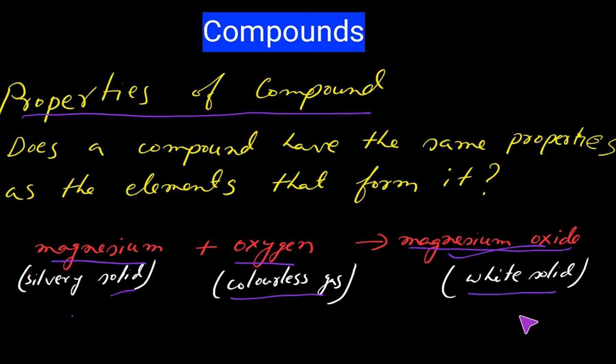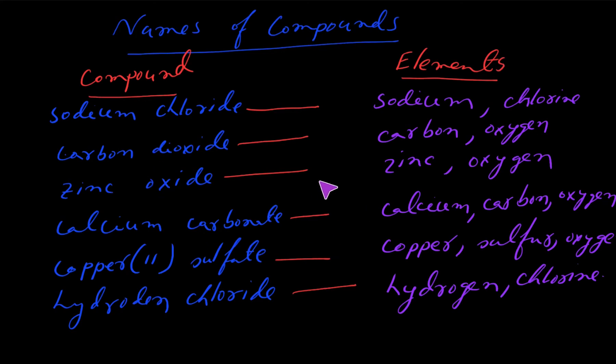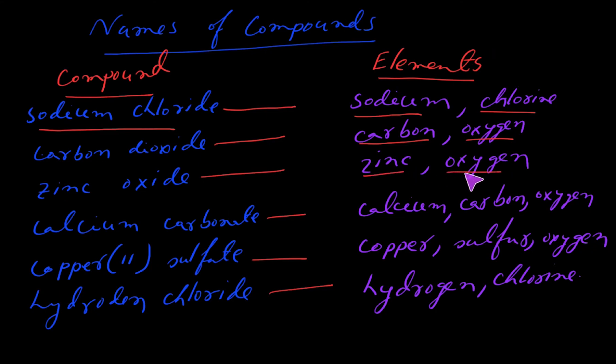Names of compounds: This table shows a list of some compounds and their elements. Notice that each compound has a chemical name indicating the elements. For example, sodium chloride contains sodium and chlorine. Carbon dioxide contains carbon and oxygen. Zinc oxide contains zinc and oxygen. Calcium carbonate contains calcium, carbon, and oxygen. Copper sulfate contains copper, sulfur, and oxygen. Hydrogen chloride contains hydrogen and chlorine.